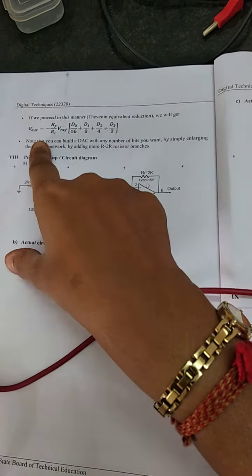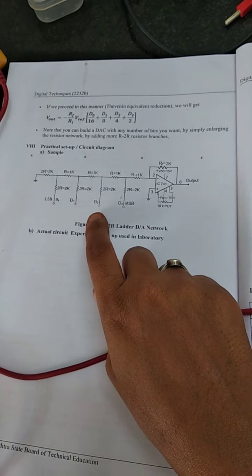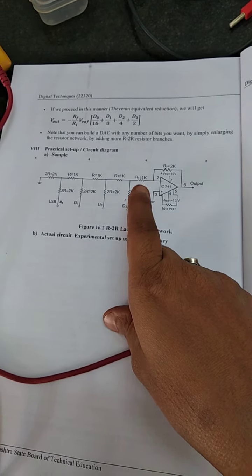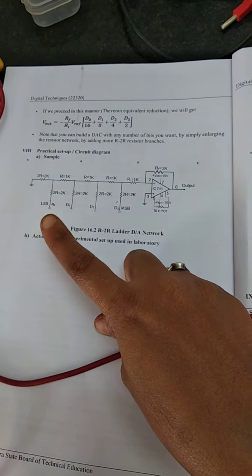We will get the output which is proportional to the digital input given and V-reference. So you can see this diagram as there is a ladder network, R2R ladder network. Using IC741 we implement this digital to analog converter.